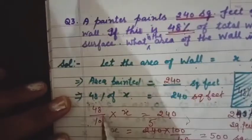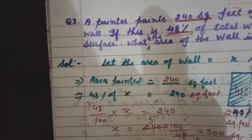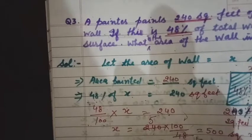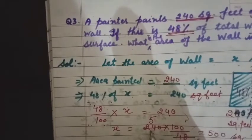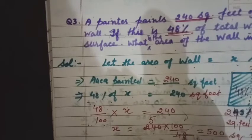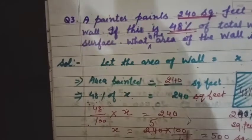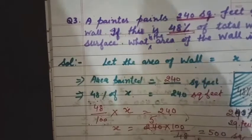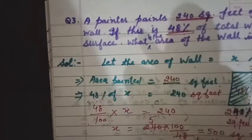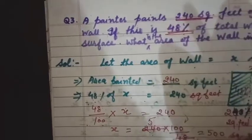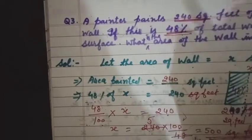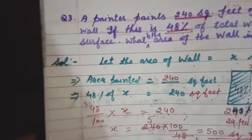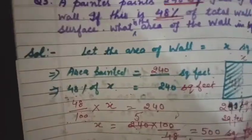Moving 48/100 to the other side gives its reciprocal: 100/48. So x = 240 × 100/48. 48 fives are 240, so we can cancel — 240 divided by 48 = 5, giving x = 5 × 100 = 500 square feet. Total area of the wall is 500 square feet.